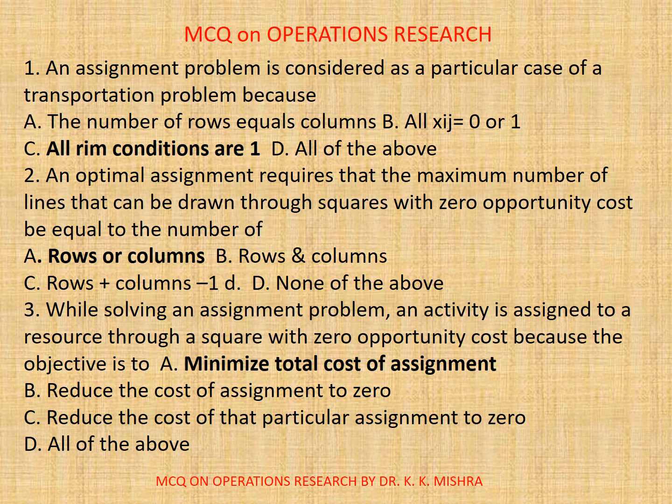Question 2. An optimal assignment requires that the maximum number of lines that can be drawn through squares with zero opportunity cost be equal to the number of: A. Rows or columns. B. Rows or columns. C. Rows plus columns minus 1. D. None. The correct answer is A: Rows or columns.